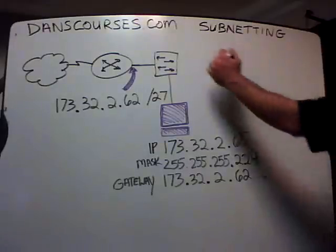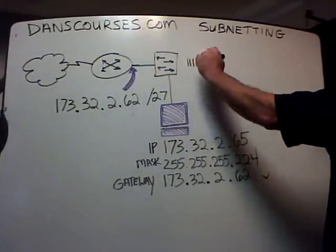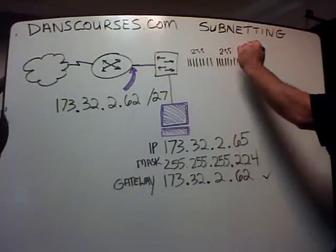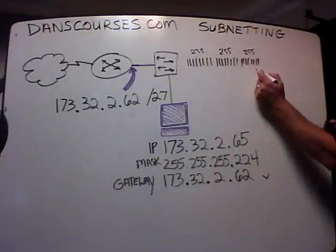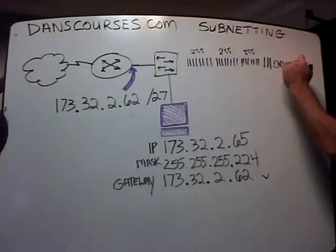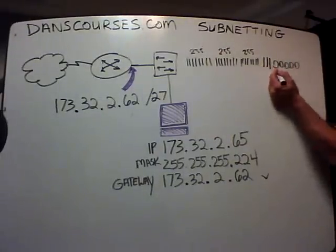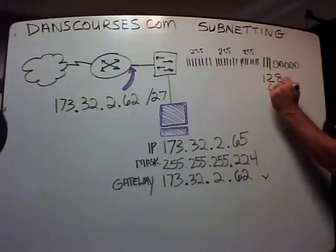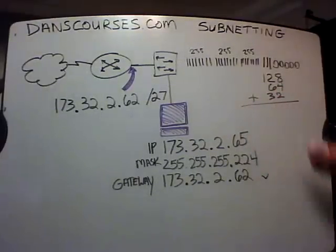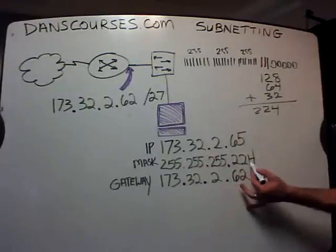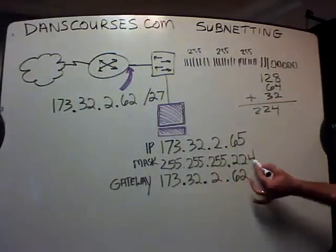That's easy to solve — I'll give you the long way. Draw 27 ones. Eight ones gives you 255, another eight ones gives you another 255, another eight ones gives you 255 — that's 24 ones. Then in the last octet, you have three ones and five zeros. You have to know your place values: 128, 64, 32, 16, 8, 4, 2, 1. So 128 plus 64 plus 32 equals 224. So slash 27 is 255.255.255.224 — the subnet mask is correct. So far, we don't have a problem.